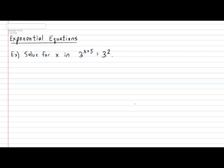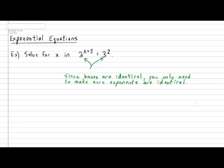Let's begin by taking a look at a very quick example, perhaps one of the easiest that you'll ever encounter. Solve for x in the equation 3 exponent x plus 5 equals 3 exponent 2. Well, logically, if the bases are already identical — in this case they're both 3 — then all you really need to worry about is making sure that the exponents are identical.